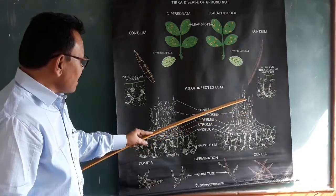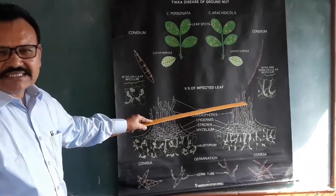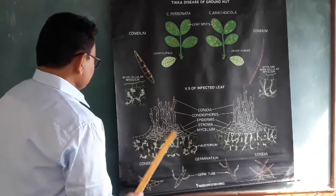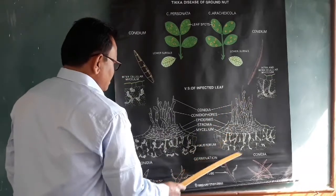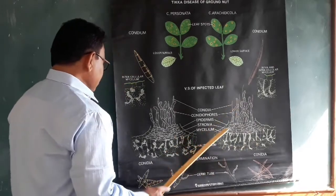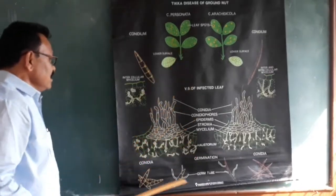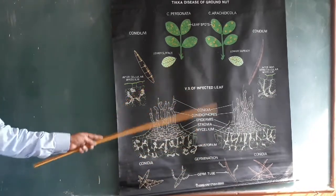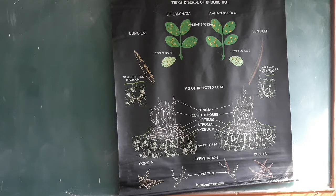After the conidia fall, markings called scars remain behind on the conidiophores. Both species form intercellular and intracellular mycelium, produce stroma, and then conidiophores which produce conidia. The conidia are septate. This summarizes the causal organisms — two Cercospora species: Cercospora arachidicola and Cercospora personata.